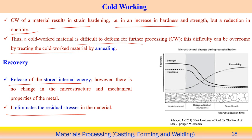During work hardening, the maximum amount of energy is stored. Some of that energy is recovered — known as the recovery stage — and the remaining energy is released through the formation of new recrystallized grains. These recrystallized grains are almost stress-free, and stored energy is largely released during recrystallization, remaining roughly constant once grain growth begins.